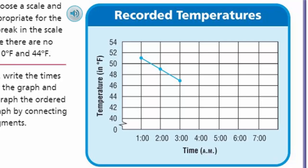A break in the scale separates values. On the line graph you can see that break — it starts at zero and jumps all the way to 40, which is not a difference of two. By putting that break on the line graph, we show we're starting at zero but there are no temperatures between zero and 44. This way the graph is more precise rather than listing every number one through forty.